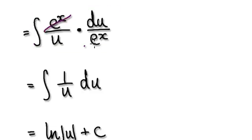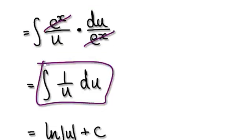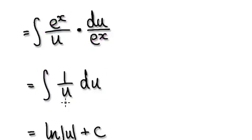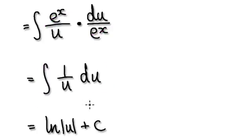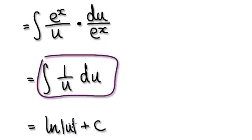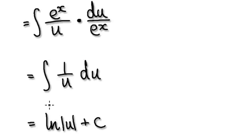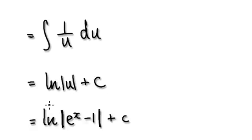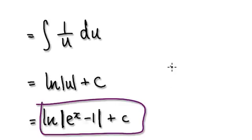So now these two will cancel out. That will then take you to here. Now integrate this and it will give you this — the natural log of the absolute value of u. So from here, integrate it and it will give you this. Now substitute back into the u, so that will give you this. So the overall answer will be this.